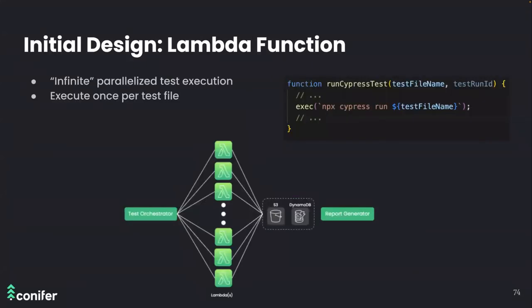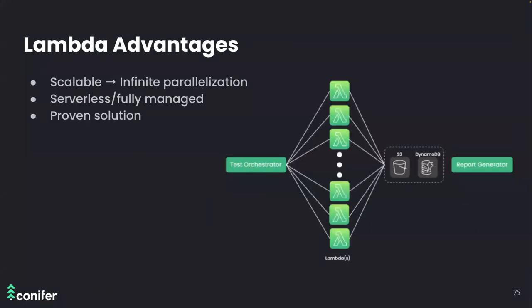We want to focus on how to perform parallelized testing on the cloud after the Docker image has been built and sent to ECR. Our first thought was to use Lambda functions — an event-driven compute service that lets you run code without provisioning resources. The concept was to invoke N Lambda functions, each executing one test file asynchronously. Lambda possesses infinite parallelization capacity, represents a fully managed solution requiring no resource management, and has been used successfully to parallelize end-to-end testing with Selenium.